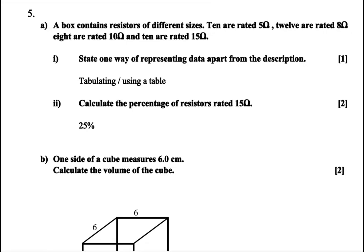Welcome guys, let's look at our combined science paper for November 2020, question number five. So a box contains resistors of different sizes. Ten are rated 5 ohms, then twelve are rated 8 ohms. So we have 10 here, and then we have 12 of them are rated 8 ohms.